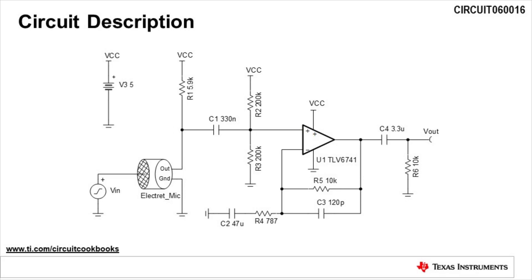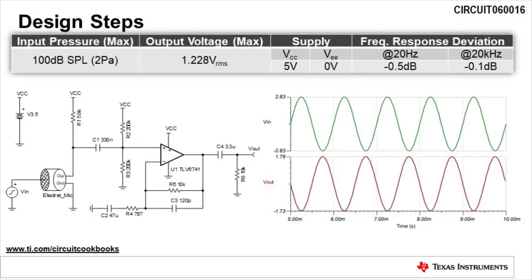This video explains how to design the circuit using TI's TLV6741 in a few easy steps. The design goal for this circuit is to produce a maximum output voltage of 1.228 volts RMS for an input pressure level to the microphone of 100 dB SPL. The circuit uses a single 5 volts supply. The frequency response deviation at 20 Hertz is negative 0.5 dB and at 20 kilohertz is negative 0.1 dB.